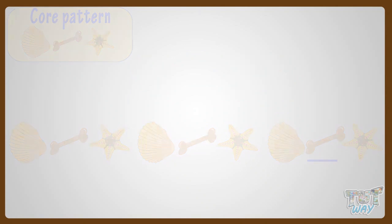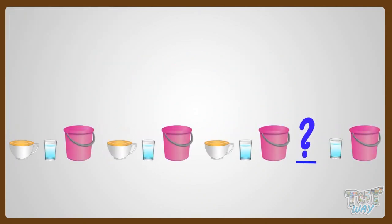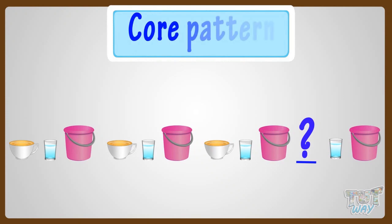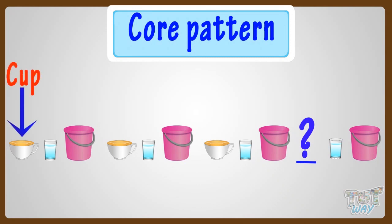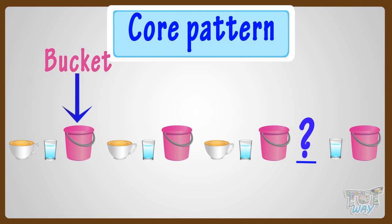Now help me complete another pattern. Let's find out the core pattern first. The pattern that's getting repeated here is a cup, then a glass, and then a bucket.